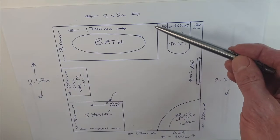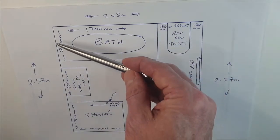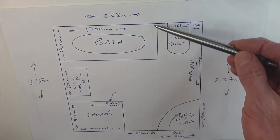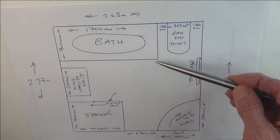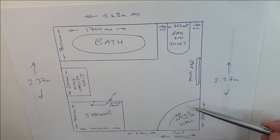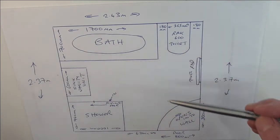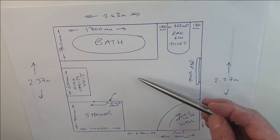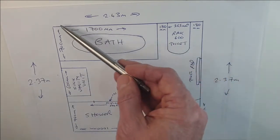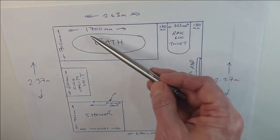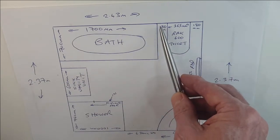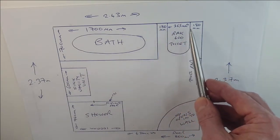We drew in a standard bath — 1.7 meters long by 700mm deep. The door was on the opposite side, so we drew that in too. That left us a big space on one side and a small space on the other. Of the 2.43 meters, 1.7 meters is taken up by the bath, leaving around 700 millimeters — our starting point for the design.